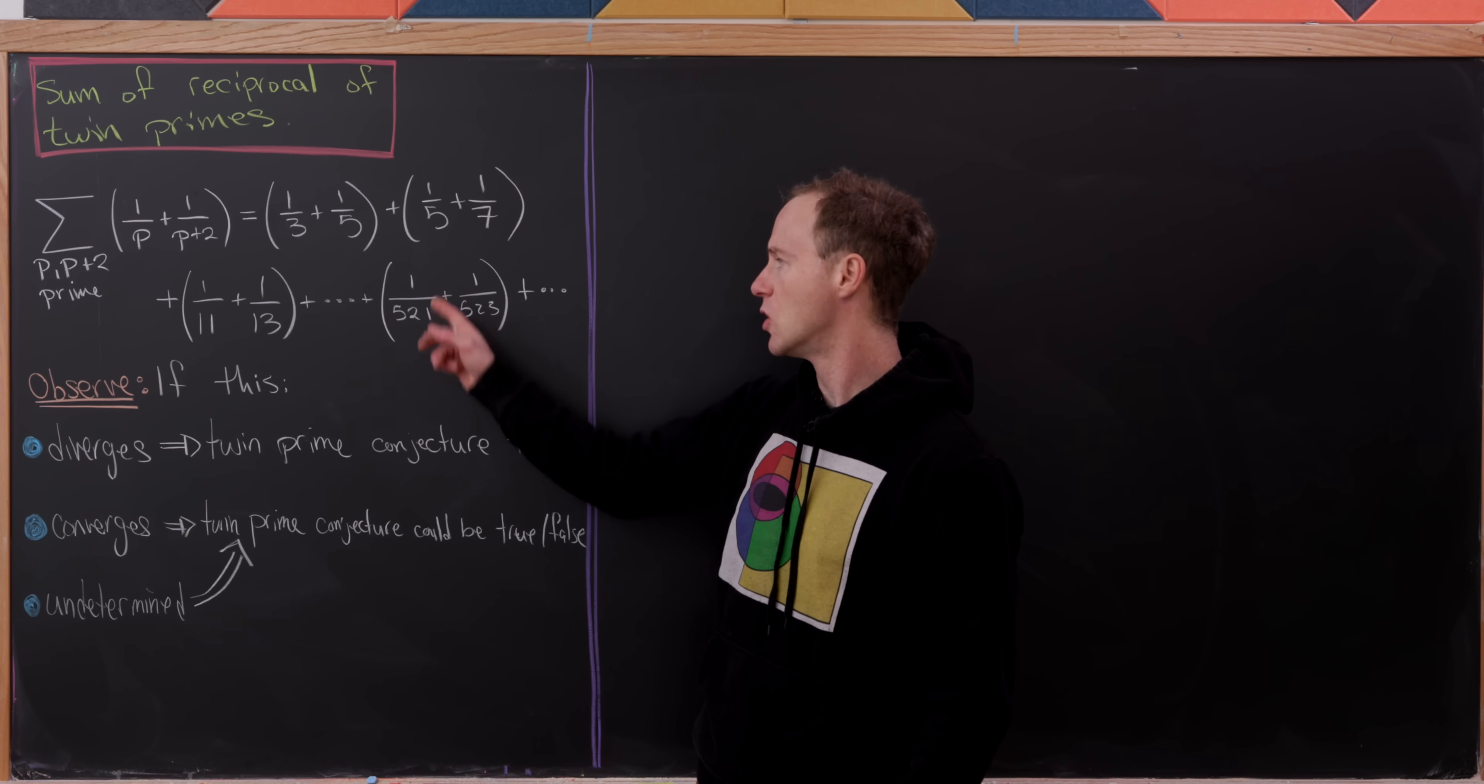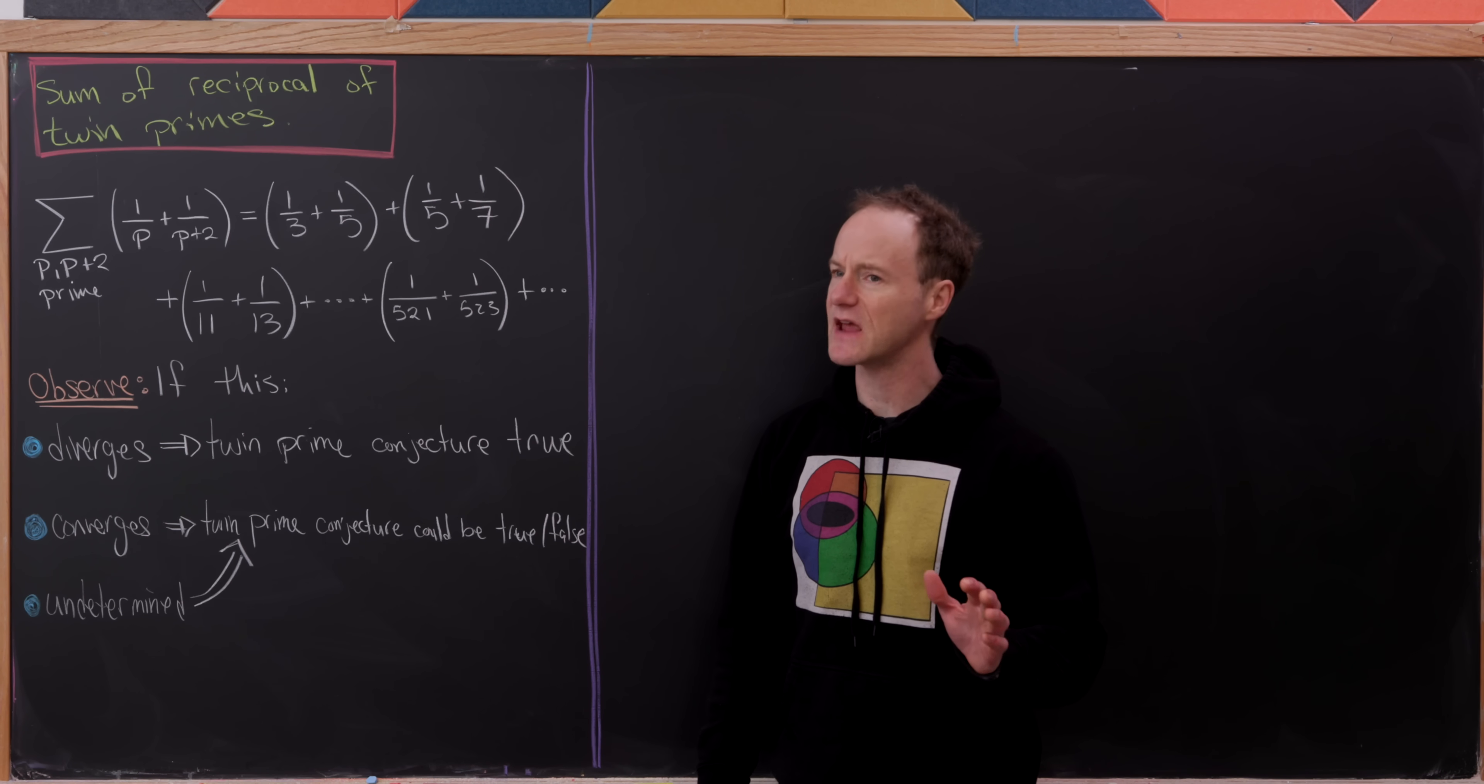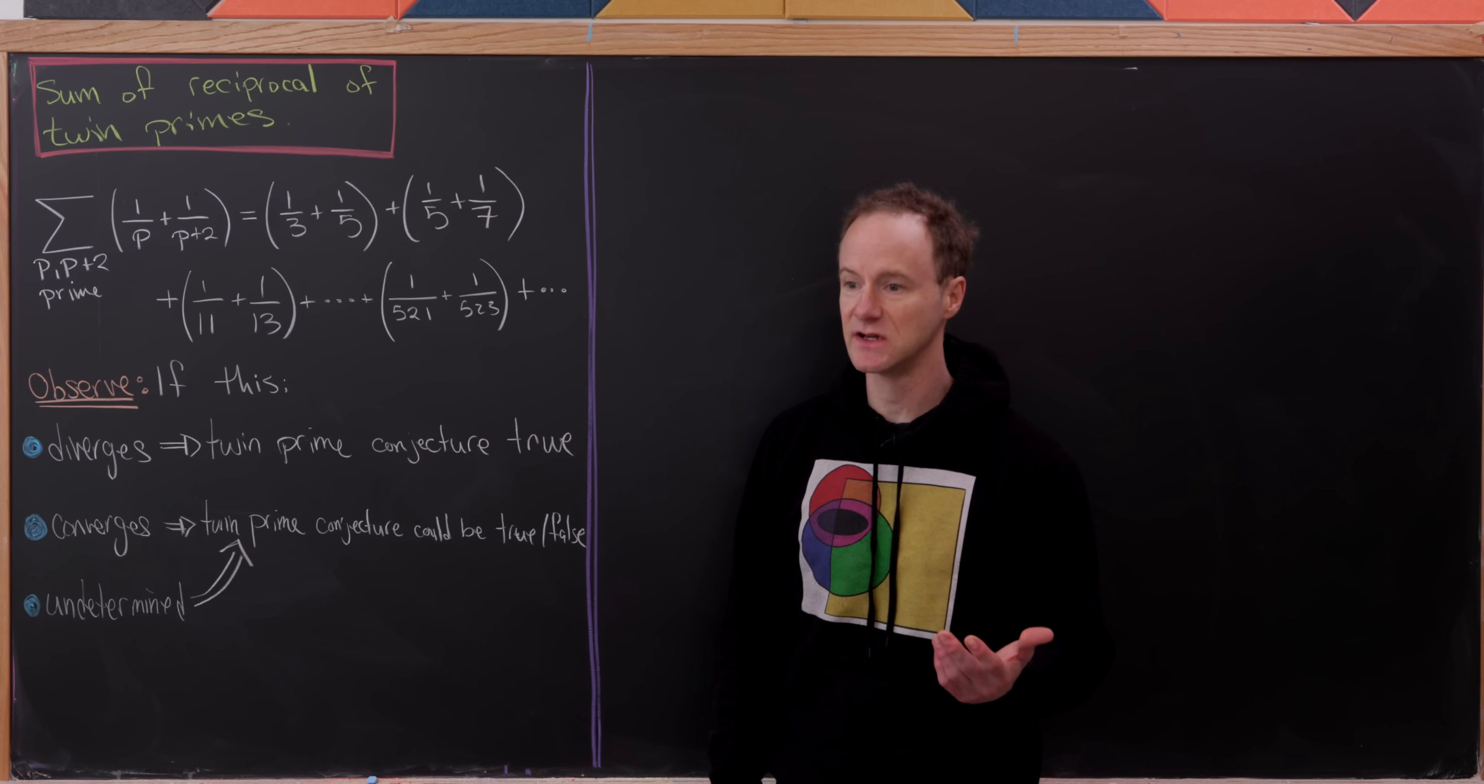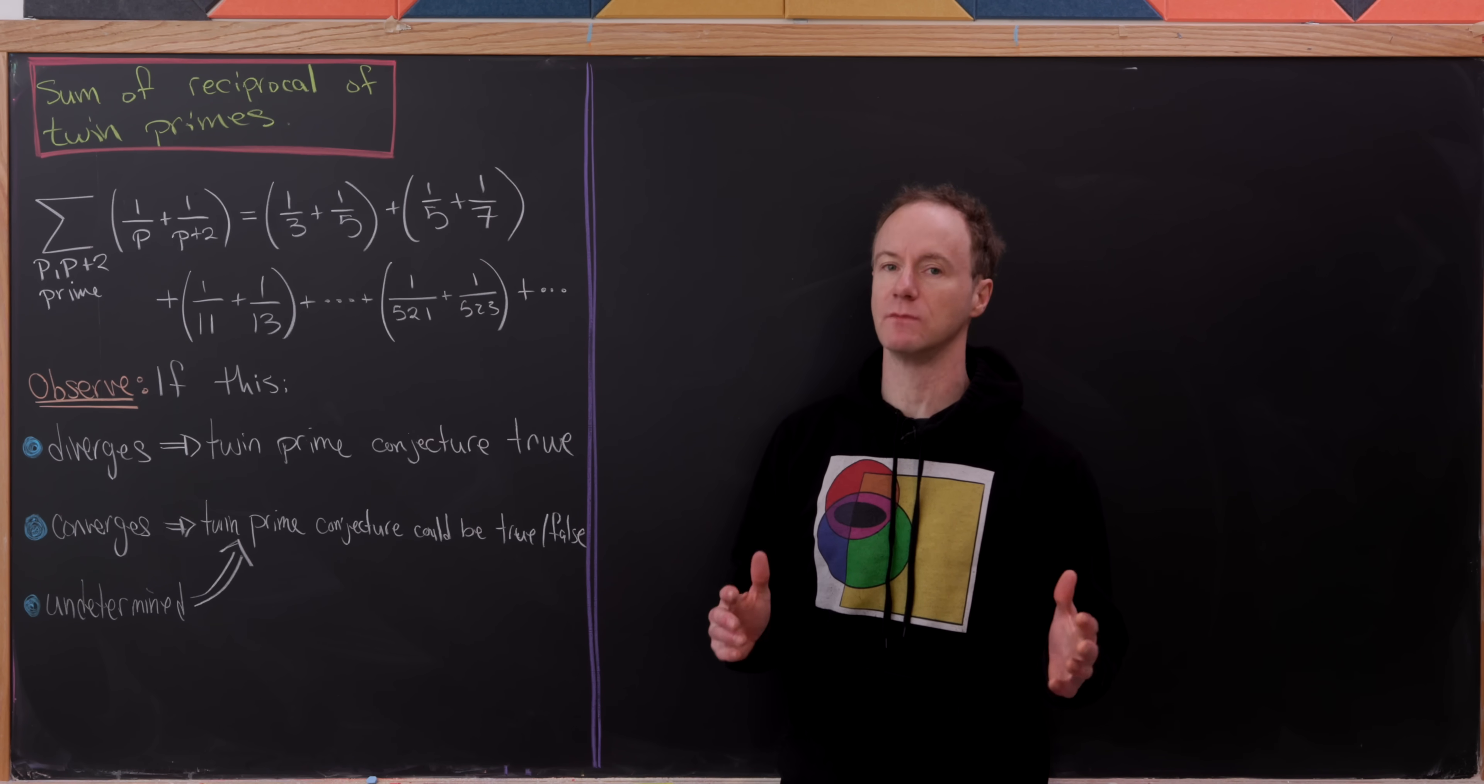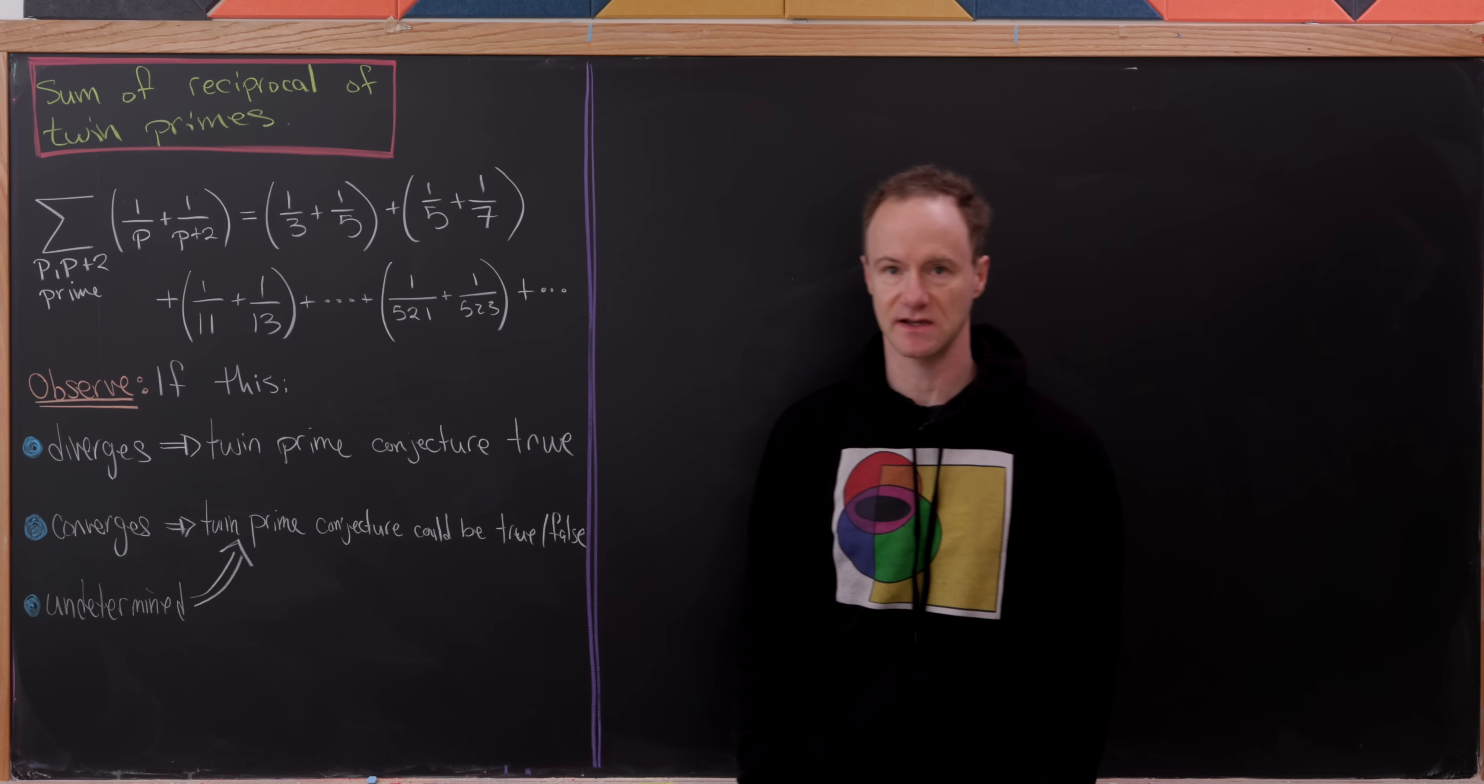Out here you've got 1 over 521 plus 1 over 523, and then it goes, well I would say forever and ever and ever. But the full twin prime conjecture has not been proven. So in fact, technically, even though we consider it most likely to be true, this is unknown if it's a finite sum or an infinite sum.